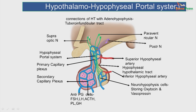The tuberoinfundibular tract of the hypothalamus controls the secretion of the following hormones stored in cells of the anterior pituitary lobe: the follicle-stimulating hormone, the luteinizing hormone, the adrenocorticotropic hormone, prolactin and the growth hormone. That is the way the hypothalamus through its nuclear complexes controls both the anterior and posterior pituitary, but in two different ways.